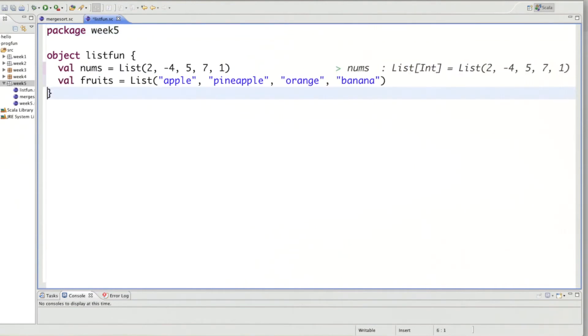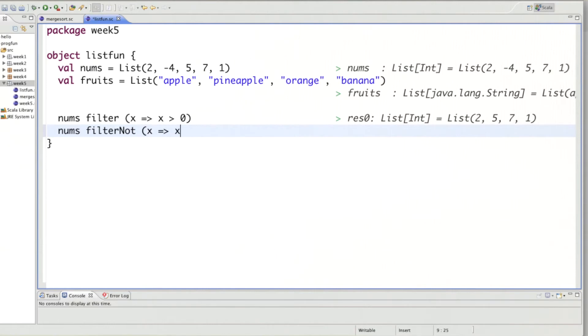And we have our test data here. And what we're going to do is, let's say the first one would be nums filter. So all numbers greater than zero. So that would have filtered out the minus four here. If we do nums filter not X, X greater than zero. What do you expect to get? Right? You'd expect to get just the negative number minus four.